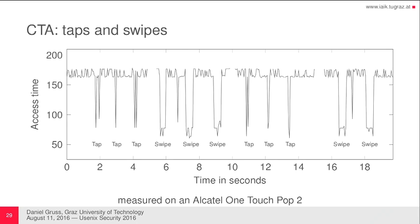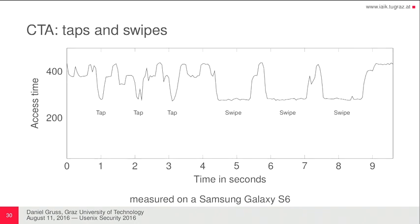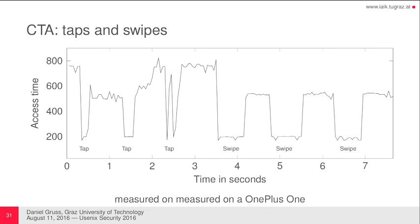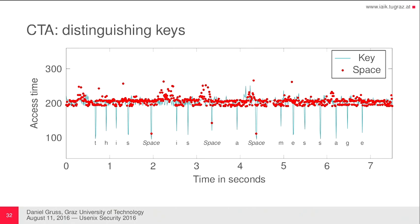We didn't find any library that leaked the specific key as on Linux, but on Android we can distinguish key groups. Over time, using a trace of taps and swipes, you can see the exact timestamps when the user touched and released the touchscreen, telling you exactly how long the swipe movement was. You can distinguish taps from swipes because taps produce only very small, short peaks.